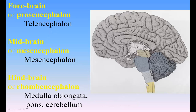Thus, in the process of development, the wall of the hindbrain undergoes modification to form the medulla oblongata, the pons and cerebellum, while its cavity is expanded to form the fourth ventricle. The midbrain forms only a small part of the adult brain. Its cavity becomes the cerebral aqueduct (aqueduct of Sylvius), which serves as a tubular communication between the third and fourth ventricles, while its walls are thickened to form the corpora quadrigemina and cerebral peduncles.